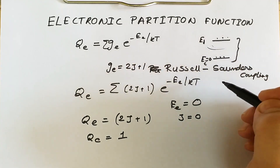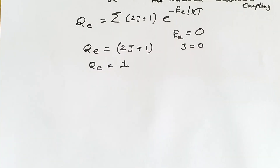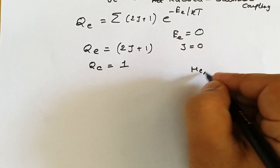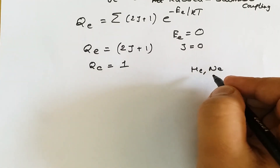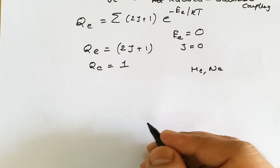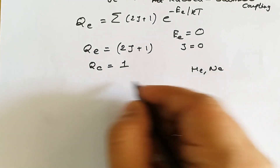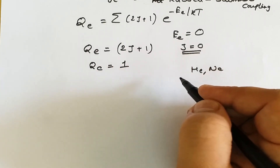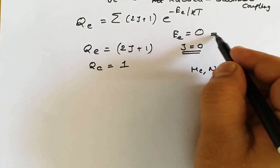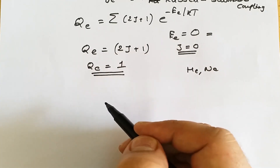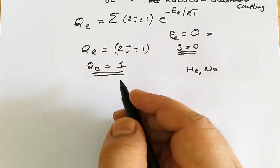For example, for monatomic molecules like helium and neon, the angular momentum quantum number J is zero and the energy is also zero. Hence for such cases, the electronic partition function is equal to one.